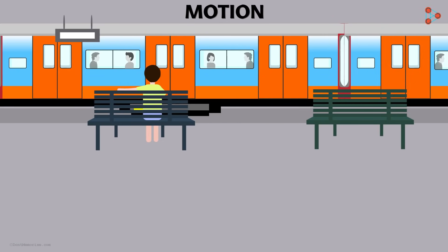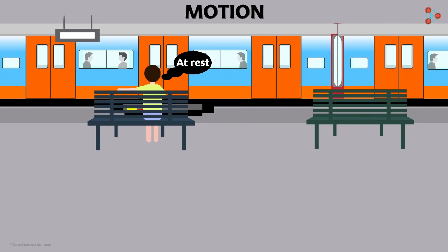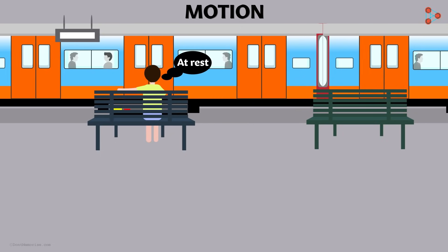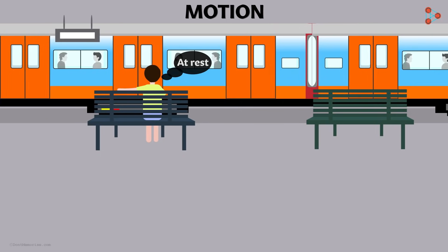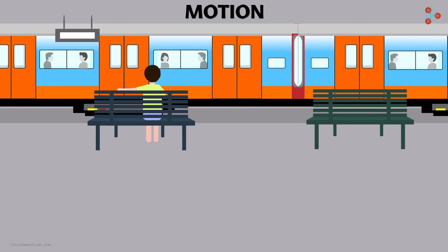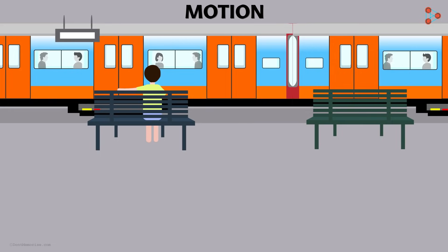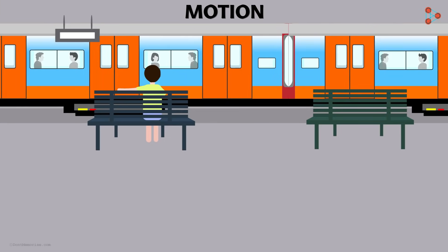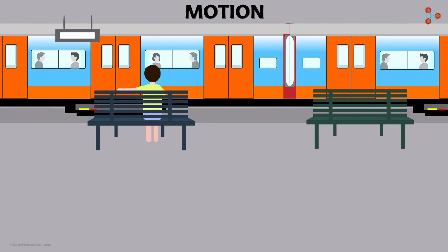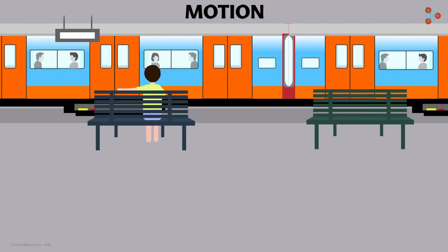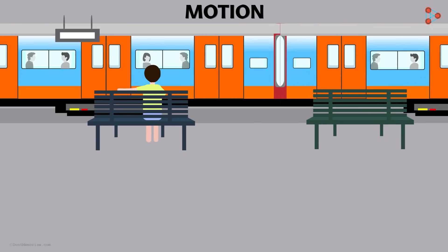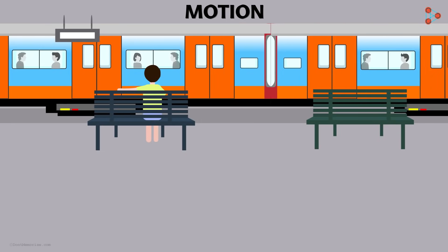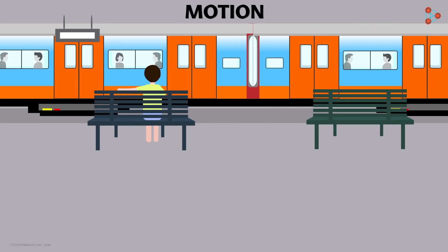Assume you are on a railway platform watching the train pass by. You are at rest. For you, both the train as well as the passengers sitting inside are in motion. But will the people sitting inside the train say the same about the other passengers? For a person sitting inside, the people in the train are not moving — they are at rest. So for the observer at rest on the platform, the people inside the train are moving, but for the person sitting inside, they are at rest.